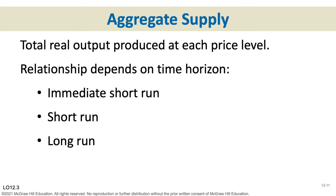Just like in Chapter 3 we looked at demand before supply, now we look at aggregate supply — the supply of all GDP. Aggregate supply is very dependent on what time frame we're in, so we need to memorize these definitions. The immediate short run is a time period too short to be able to change any of our resources.